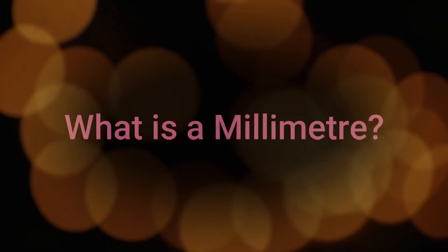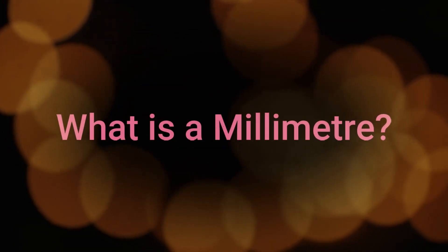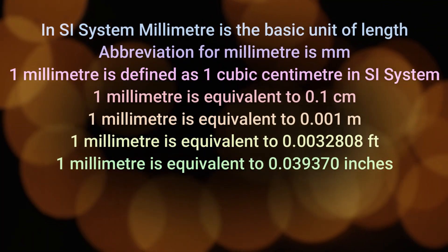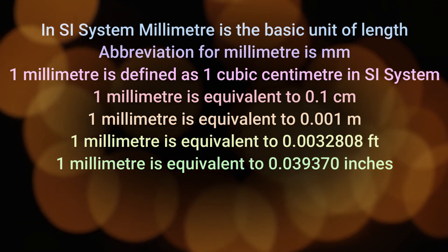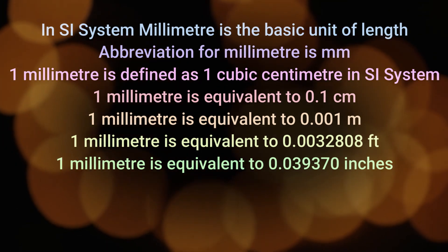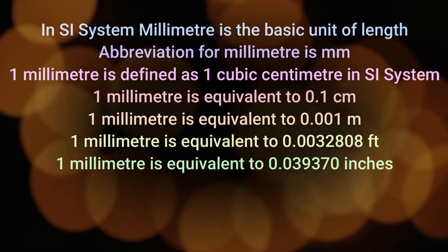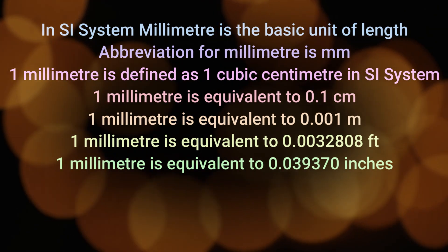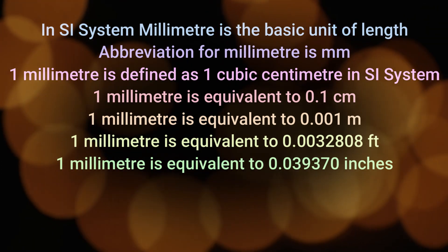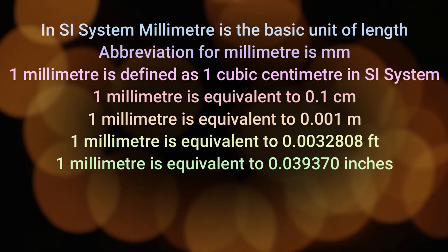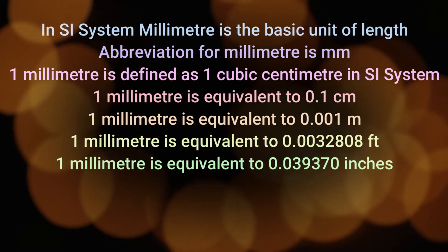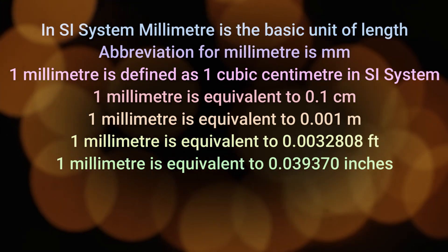Let us learn what is a millimeter. In the SI system, millimeter is the basic unit of length. The abbreviation for millimeter is mm. 1 millimeter is equivalent to 0.1 centimeters. 1 millimeter is equivalent to 0.001 meters. 1 millimeter is equivalent to 0.003281 feet.